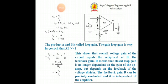The product A times β is known as the loop gain. If the loop gain is very large such that Aβ >> 1, we can neglect unity and write (1 + Aβ) ≈ Aβ, so V0/VIN ≈ 1/β. This shows that the overall voltage gain equals the reciprocal of β, the feedback gain. It means the voltage gain is no longer dependent on the gain of the op-amp but depends on the feedback voltage divider circuit using R1 and RF. Rewriting, V0/VIN = 1 + RF/R1.